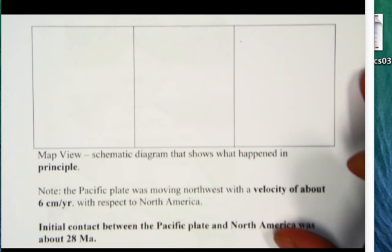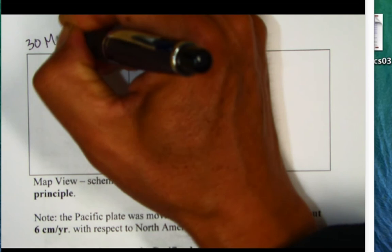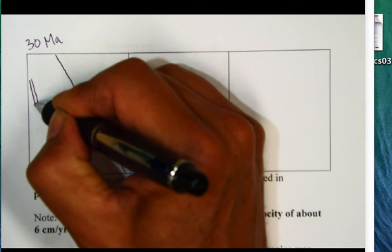We're going to do this in three parts. I want you to think about during Mesozoic time or really up until about 30 million years ago. During this time what I want you to envision is offshore California we have a mid-oceanic ridge.